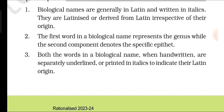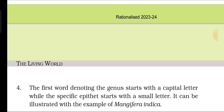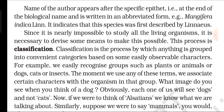Other universal rules of nomenclature are as follows. First, biological names are generally in Latin and written in italics — they are latinized or derived from Latin irrespective of origin. Second, the first word in a biological name represents the genus while the second component denotes the specific epithet. Third, both words in a biological name when handwritten are separately underlined, or printed in italics, to indicate their Latin origin. Fourth, the first word denoting the genus starts with a capital letter while the specific epithet starts with a small letter, as illustrated by Mangifera indica. The name of the author appears after the specific epithet in abbreviated form — for example, Mangifera indica Lin. — indicating this species was first described by Linnaeus. Since it is nearly impossible to study all living organisms, it is necessary to devise some means to make this possible. This process is classification.